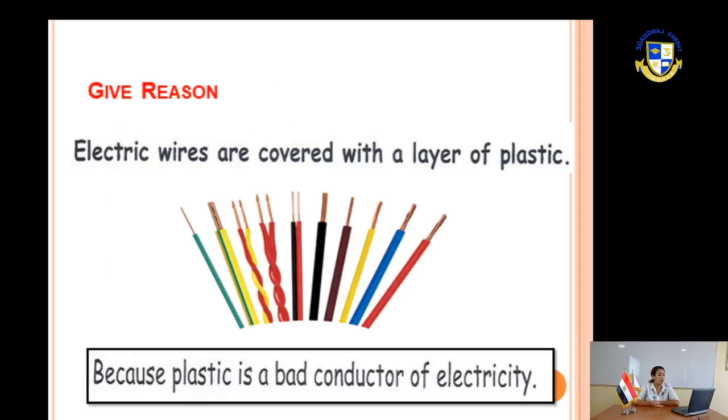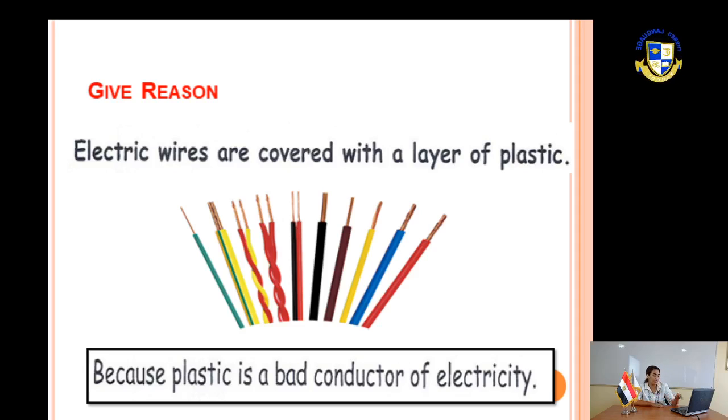Give reason: electric wires are covered with a layer of plastic because plastic is a bad conductor of electricity, to avoid electric shock.